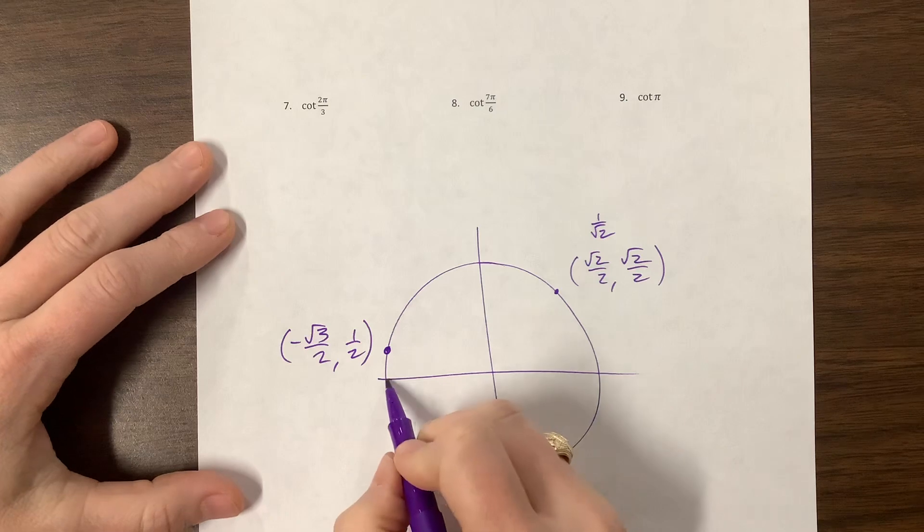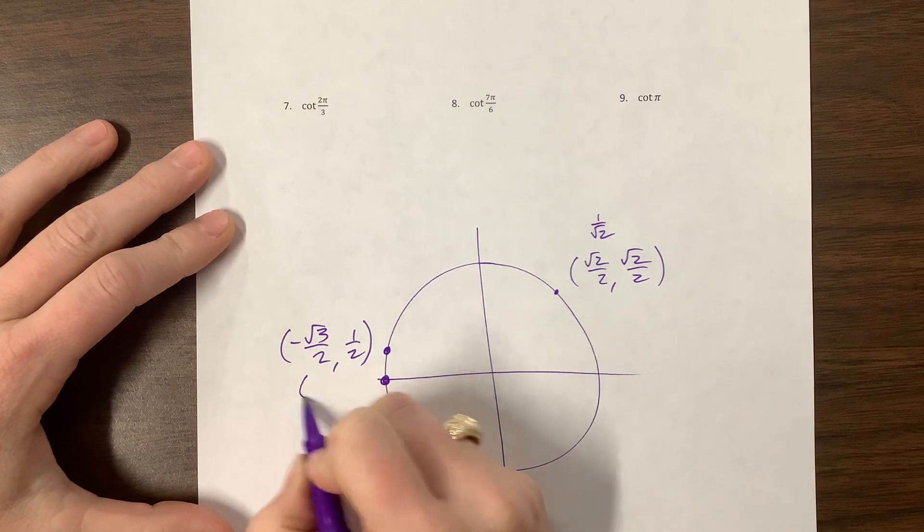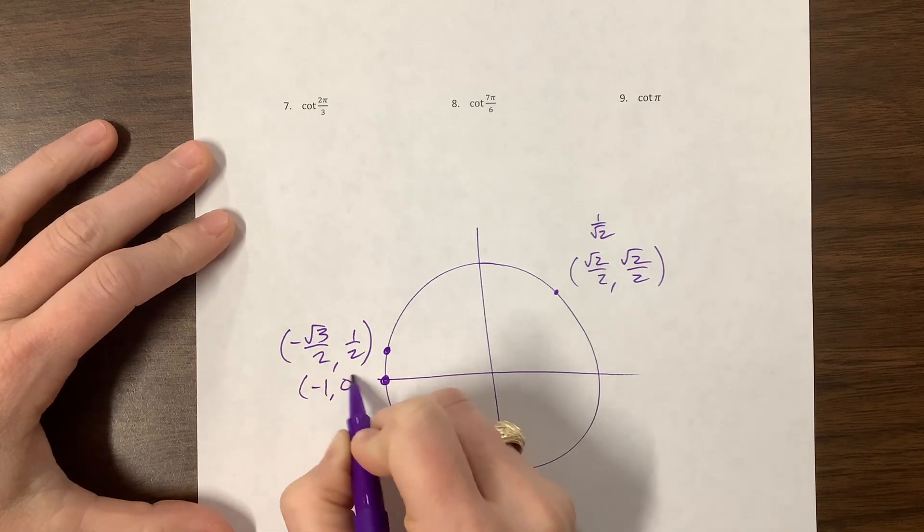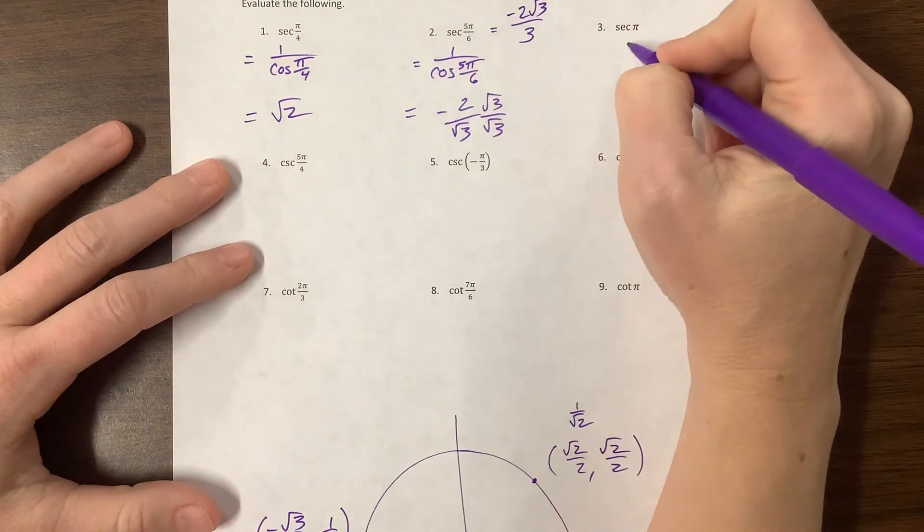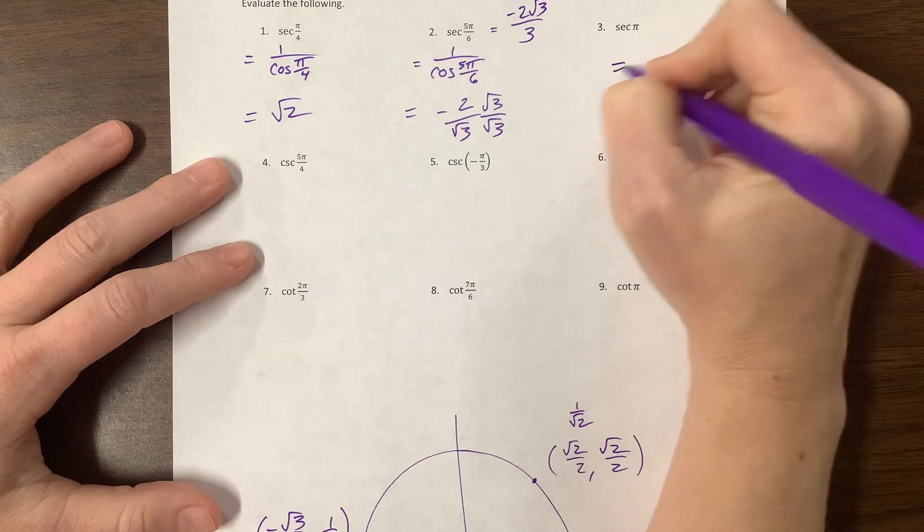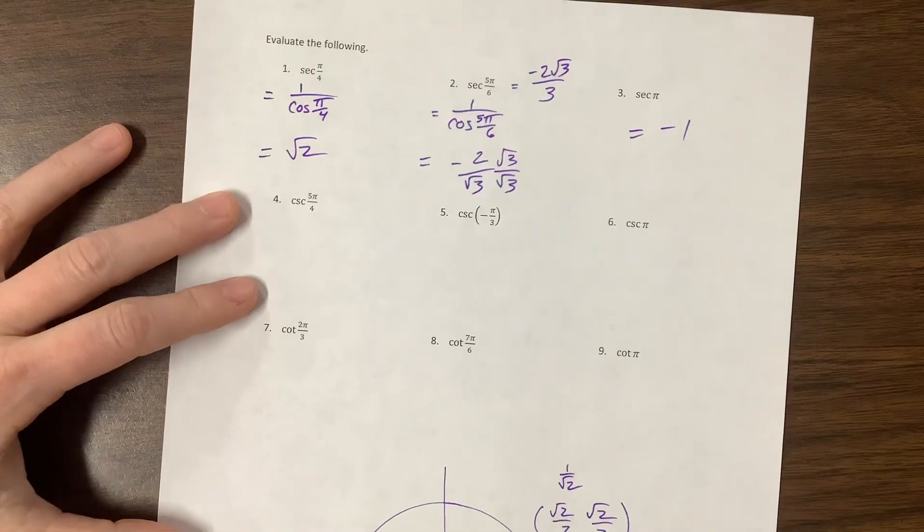Okay, secant of pi. So over here at pi, this has the coordinates of negative 1 comma 0. The cosine value is negative 1. That's the x. And so the reciprocal of negative 1 is still just negative 1. Cool? Okay.